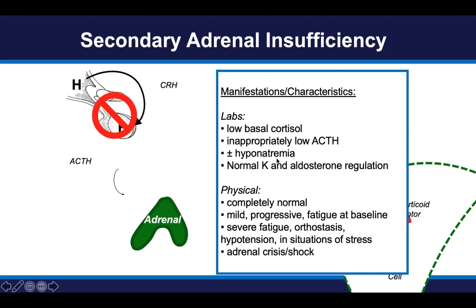Patients may or may not have hyponatremia, but importantly, because aldosterone production remains intact, potassium levels are typically normal. On physical exam, some patients — despite having low cortisol due to secondary adrenal insufficiency — may look relatively normal and may be relatively asymptomatic. However, over time and with increased physical stresses, patients may develop mild to severe fatigue, orthostasis, and low blood pressure. In situations of stress without sufficient cortisol compensation, patients can develop severe illness, adrenal crisis, or even shock.